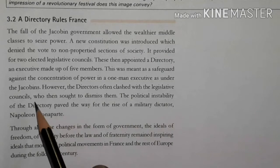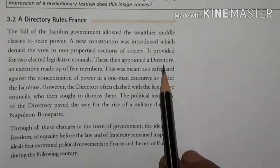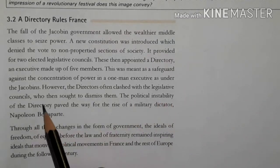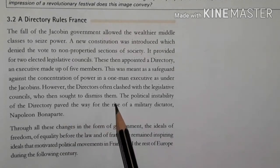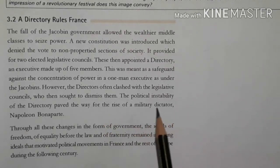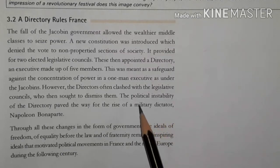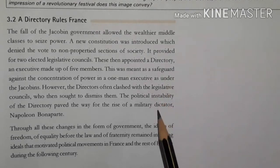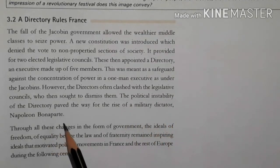However, the directors often clashed with the legislative councils. The five-member Directory frequently came into conflict with the legislature, and eventually the Directory was dismissed. The political instability of the Directory paved the way for the rise of a military dictator — Napoleon.